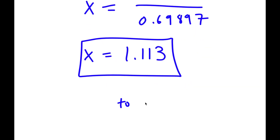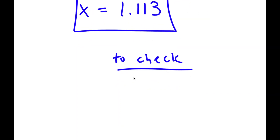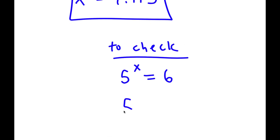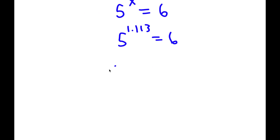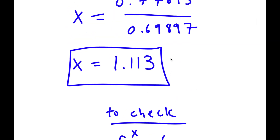To check: I have 5 to the power of x is equal to 6, and x is equal to 1.113. So I have 5 to the power of 1.113 is equal to 6. Now 5 to the power of 1.113 is actually equal to 5.997, which is approximately equal to 6. So I have 6 is equal to 6, confirming my answer is right.